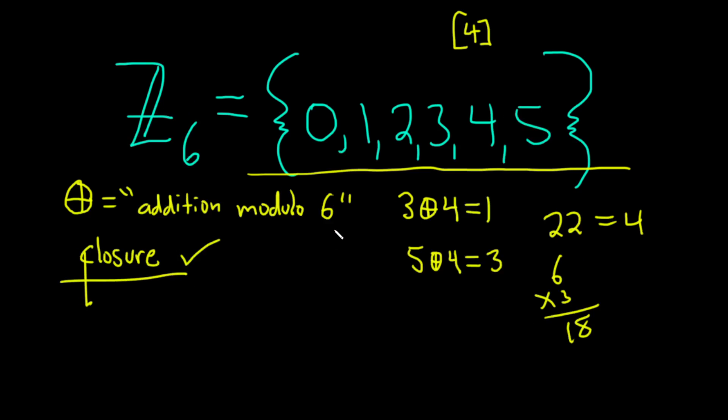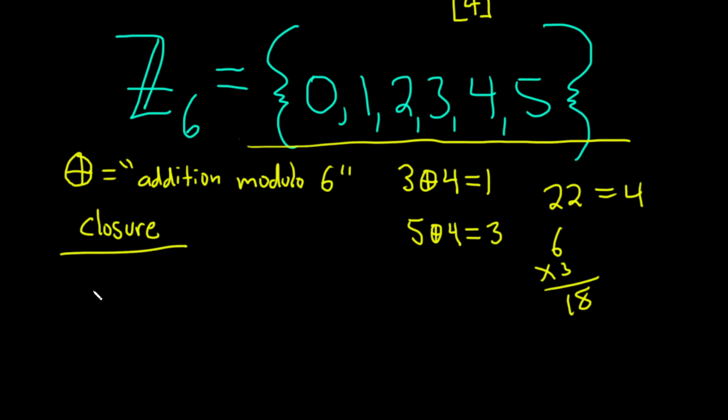Associativity is also very easy to see. My pen here is starting to, I need to adjust the settings. Associativity is also pretty easy to see because these are just regular numbers, right? So associativity is going to follow from just associativity of addition. So there's nothing crazy there.